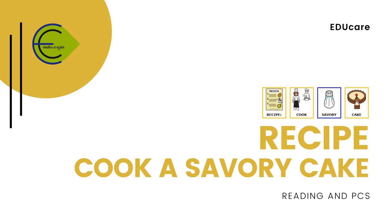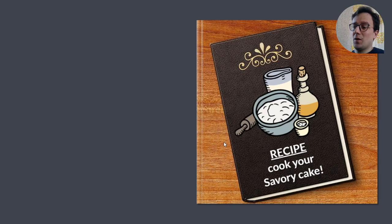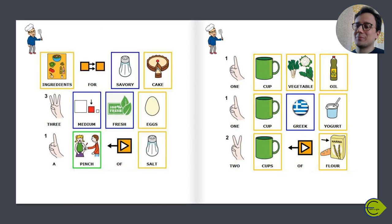Recipe: Cook a Savory Cake. Welcome to the cooking course. In this lesson, we'll learn how to cook a savory cake. Ingredients: 3 medium fresh eggs.